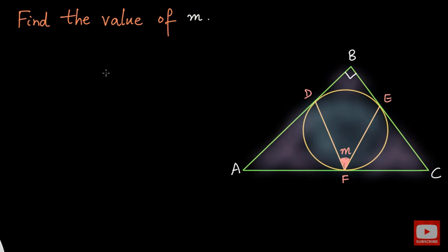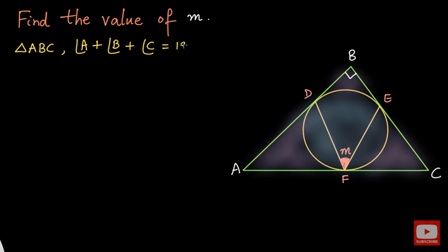Let us start with the problem. First of all I would like to take the large triangle, that is triangle ABC. This is a right angle triangle because angle B is 90 degrees. I will take triangle ABC and apply the angle sum property to this triangle. So angle A plus angle B plus angle C will be equal to 180 degrees. We know that angle B is 90. Let me give some names to angle A — I will name this angle A as X.